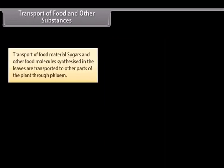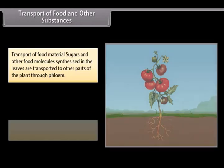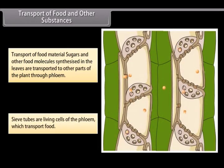Transport of food and other substances. Transport of food material. Sugars and other food molecules synthesized in the leaves are transported to other parts of the plant through phloem. Sieve tubes are living cells of the phloem which transport food.